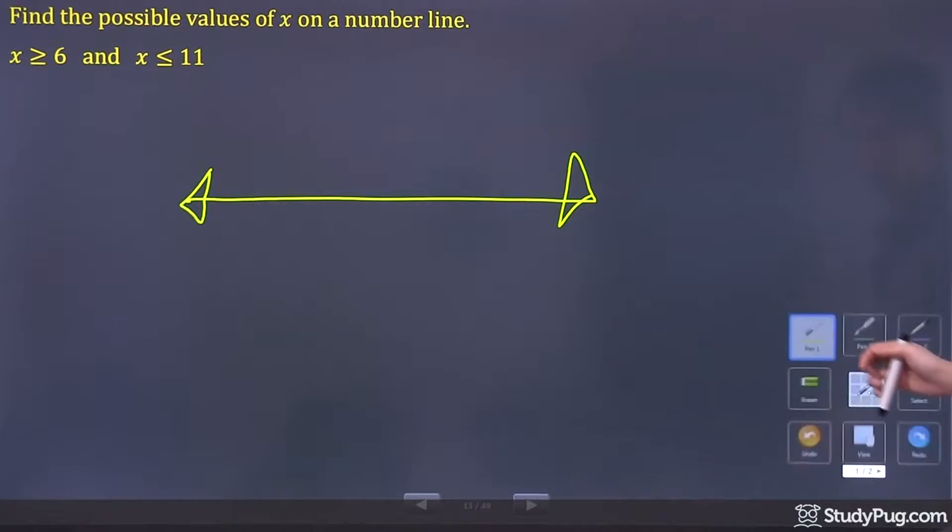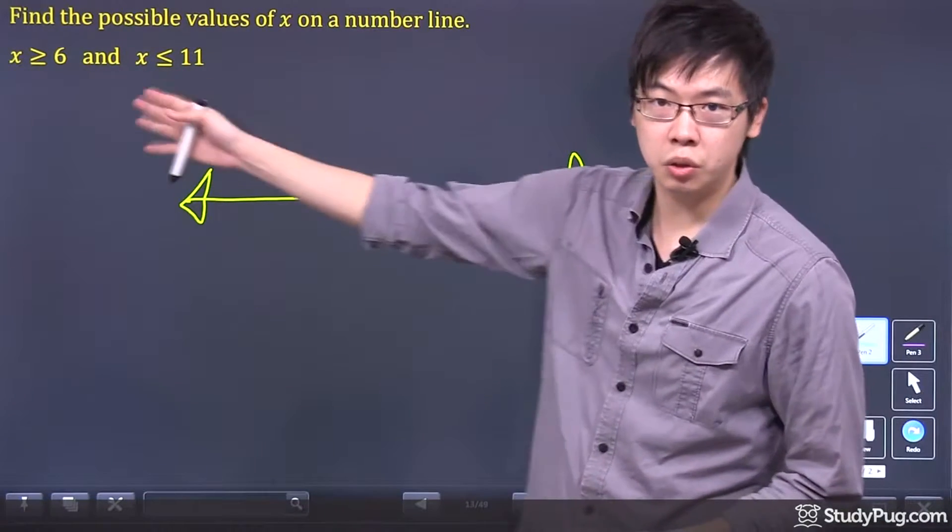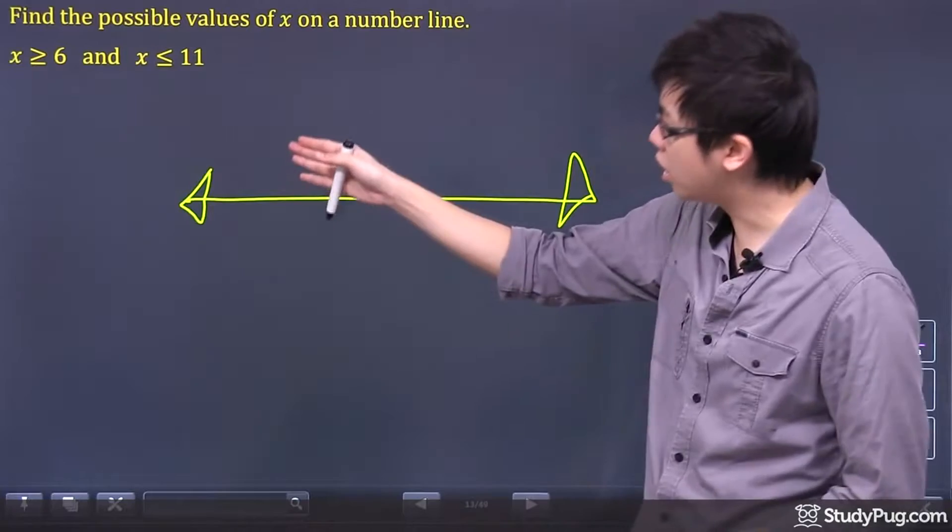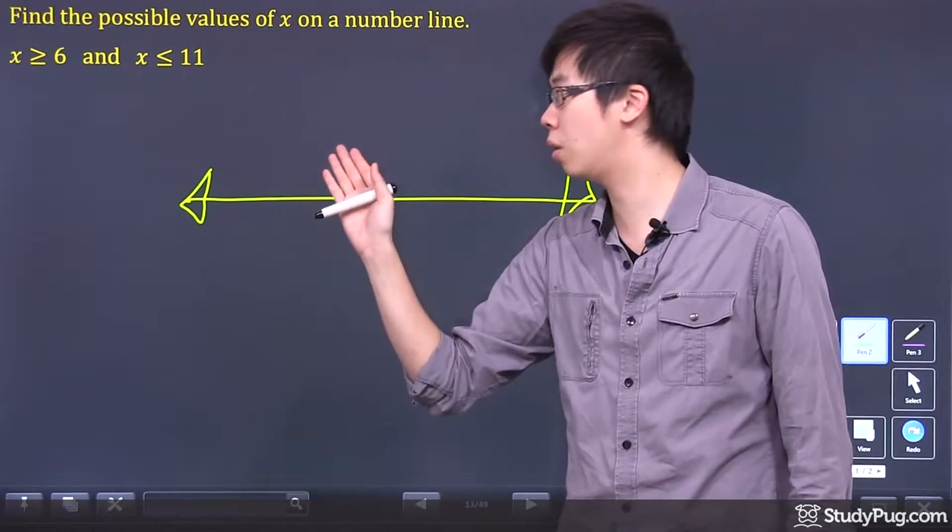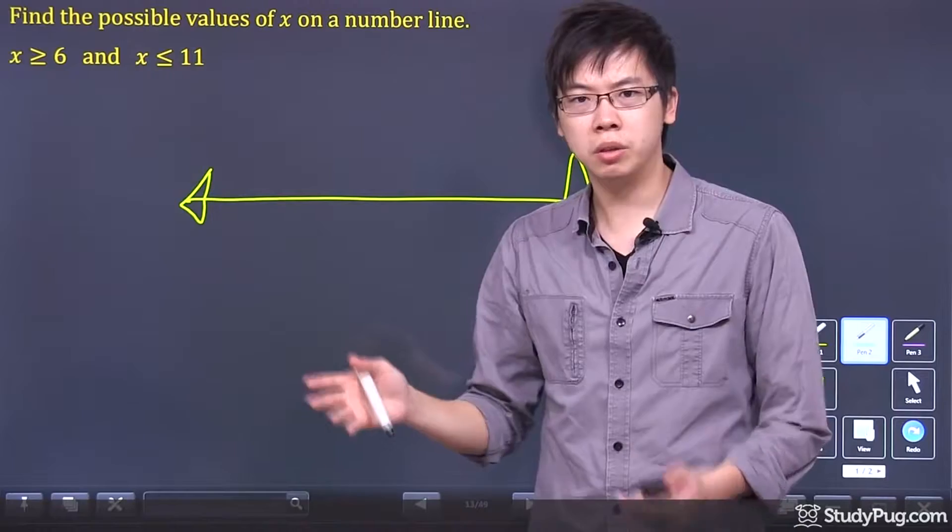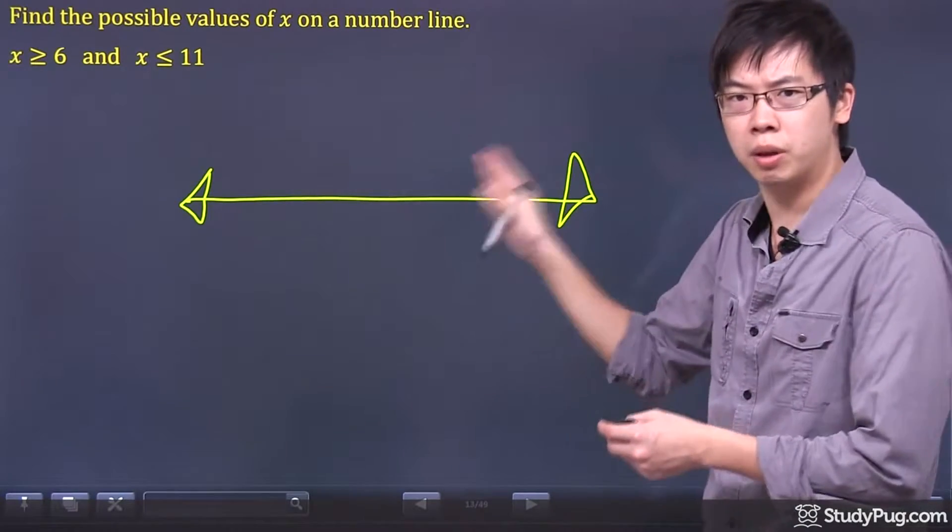What we have is a bunch of numbers here that says x is greater than or equal to 6, and at the same time that x is also less than or equal to 11. So it seems like it's greater than 6 but less than 11.